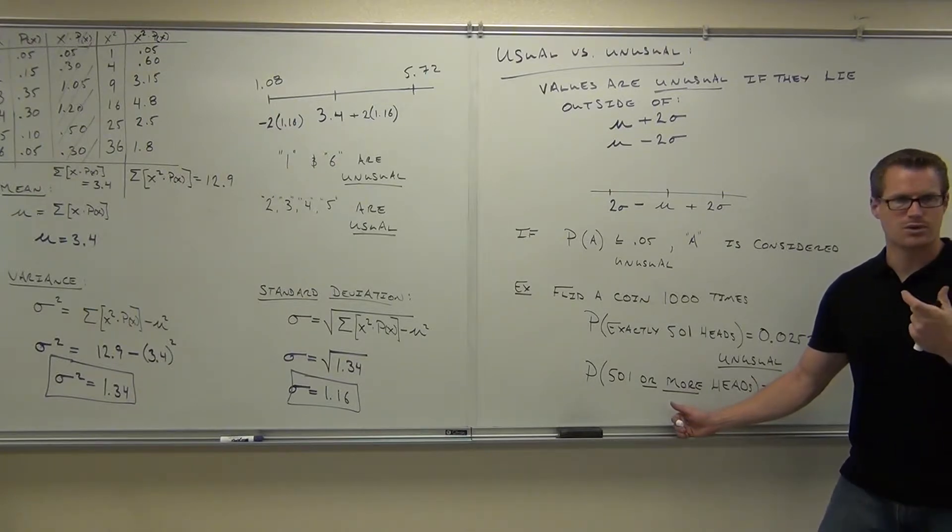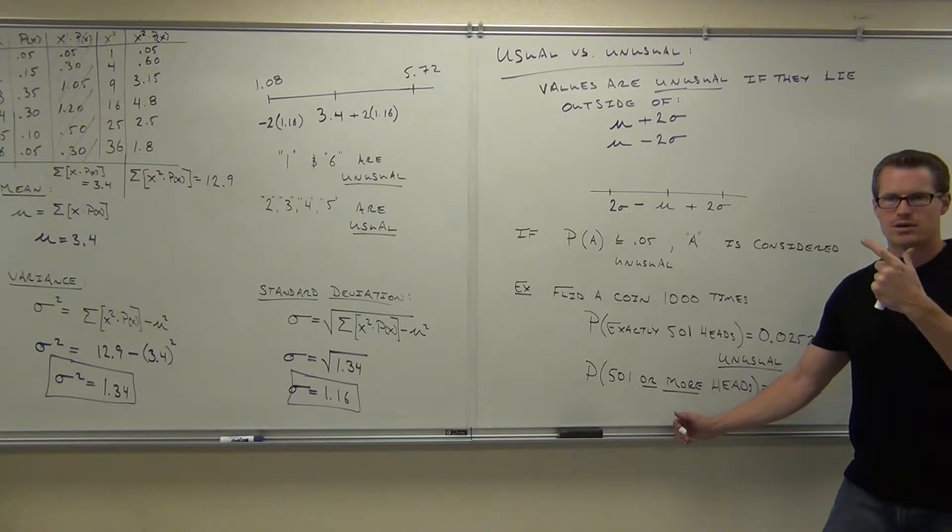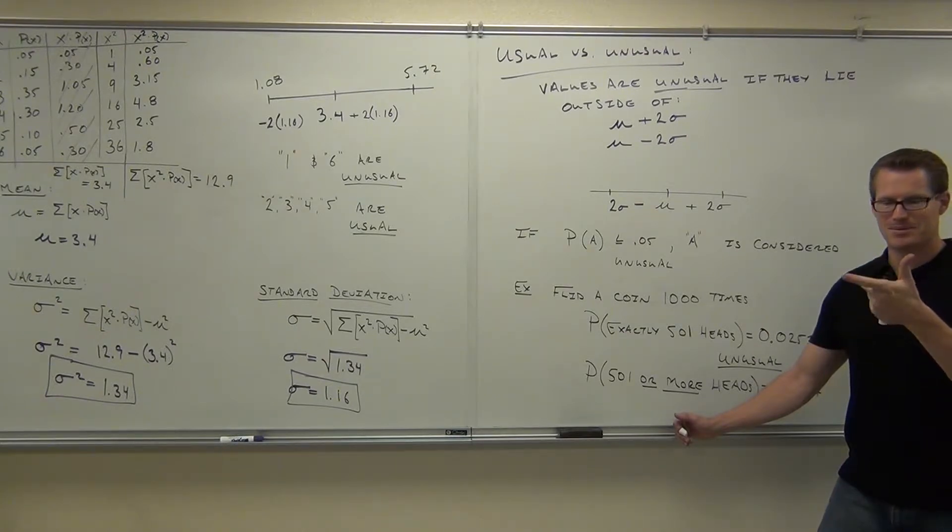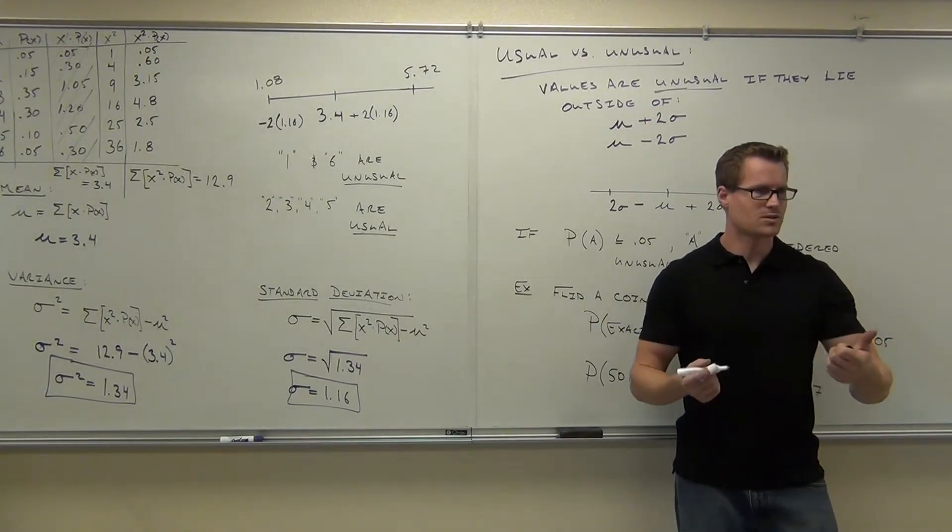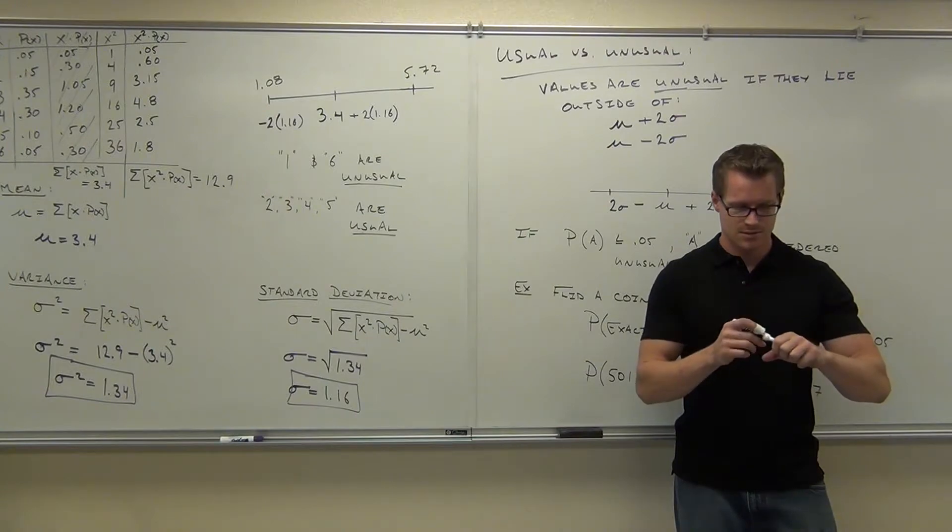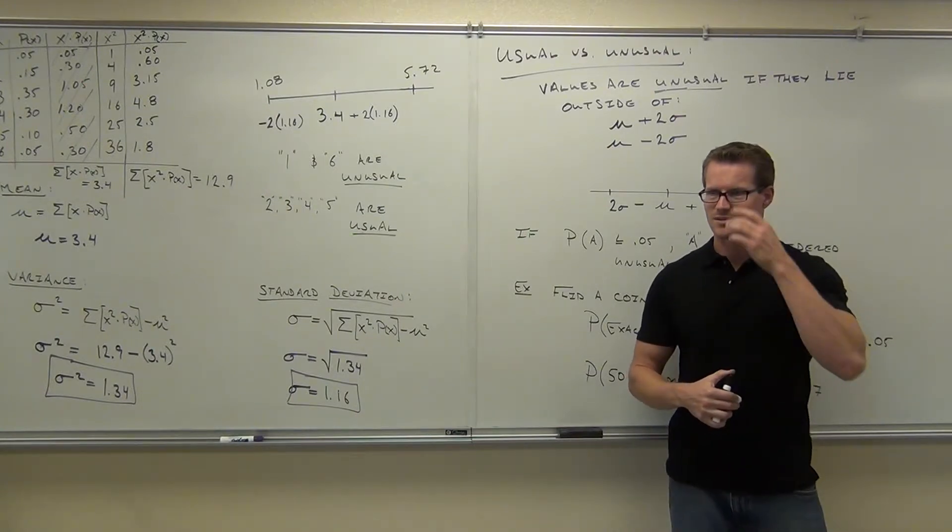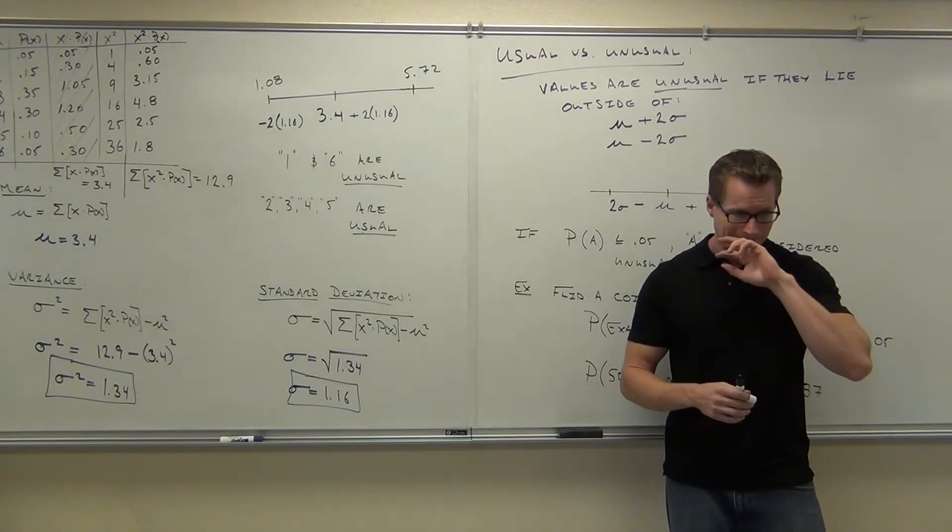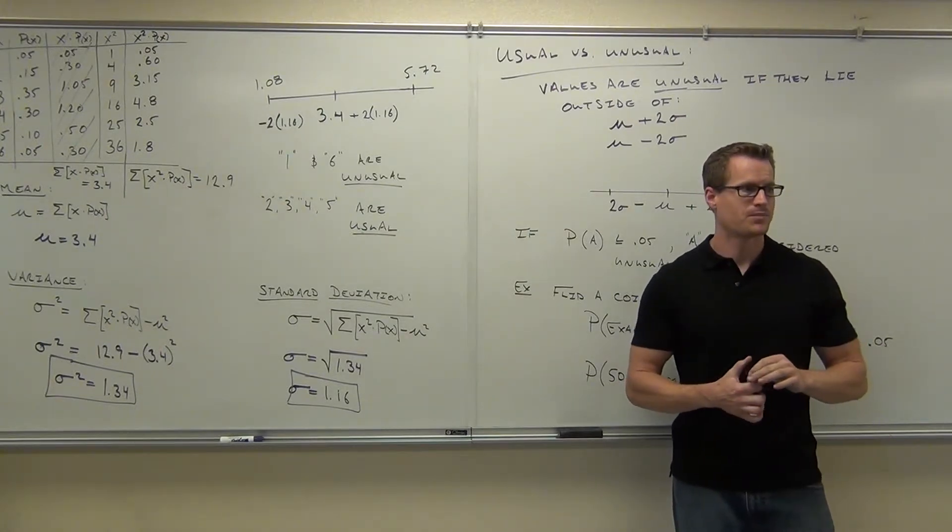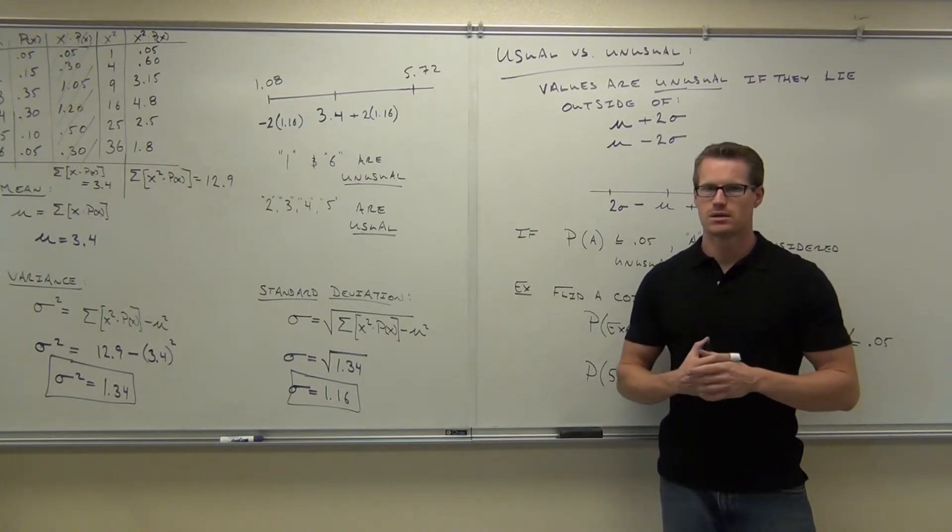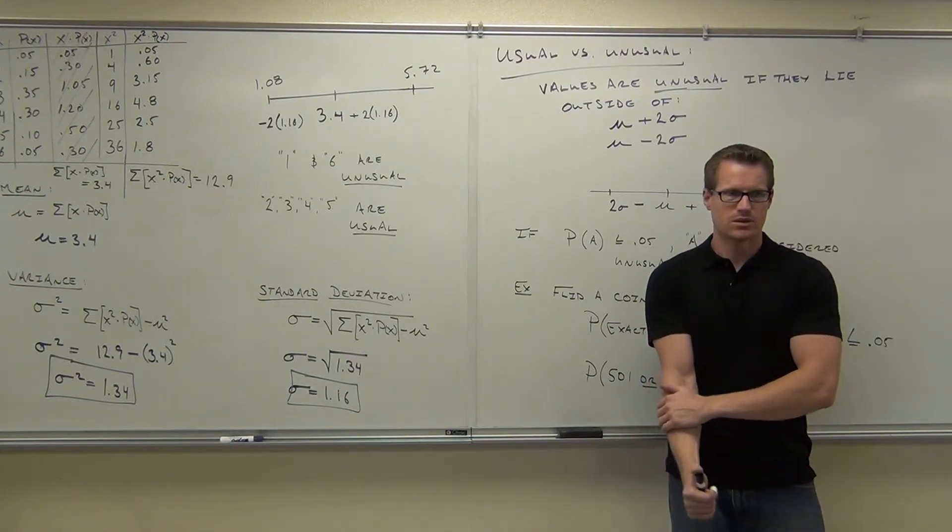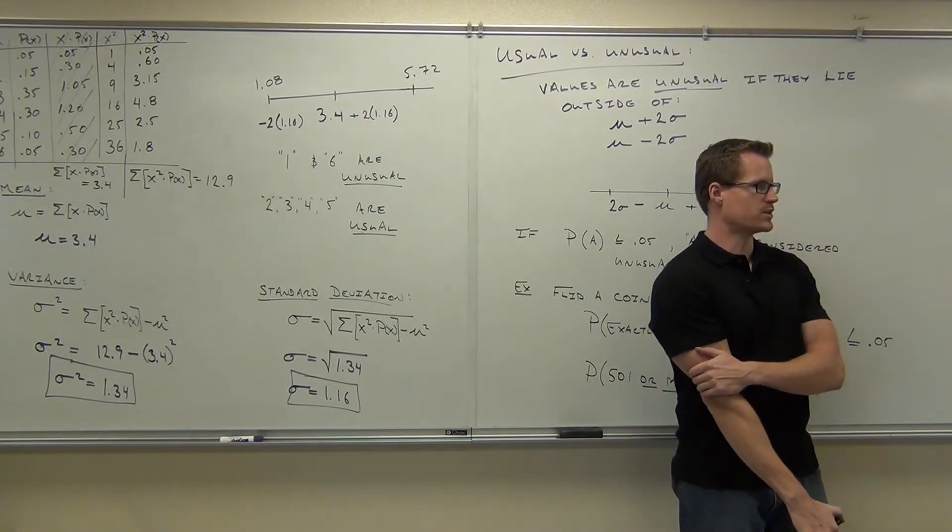Remember when you have an or probability, you better remember this for your test. If you have an or probability, do you add that or multiply that? That's why it's called the addition rule. The addition rule is used for or.